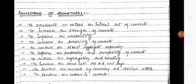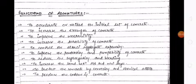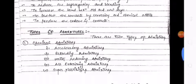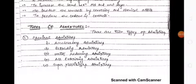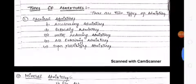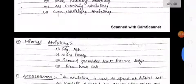Further functions include: to increase the bond between old and new layers, to protect the concrete from corrosion and chemical attacks, to produce color in concrete. Types of admixtures are: first, chemical admixtures, and second, mineral admixtures.